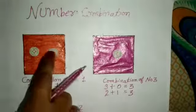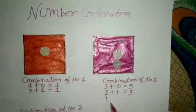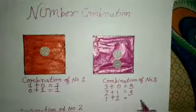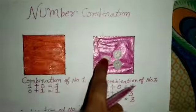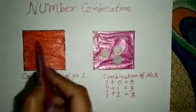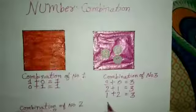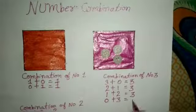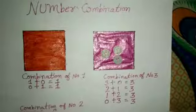Now I shift one button into the second box. Count first box me kitnay button hai — one. Plus second box me kitnay button hai — two. One plus two equal to three. Now I shift one more button into the second box. First box me nothing, zero. Second box me three buttons. Zero plus three equal to three. This is number combination.